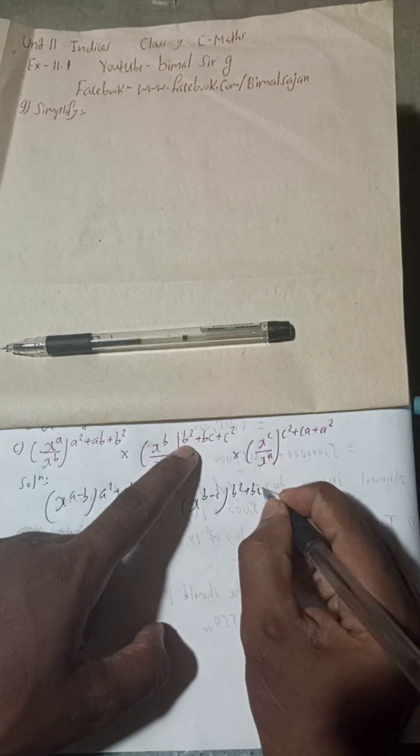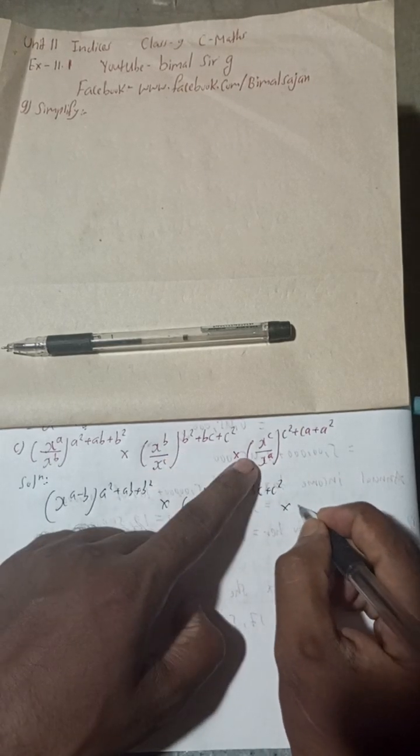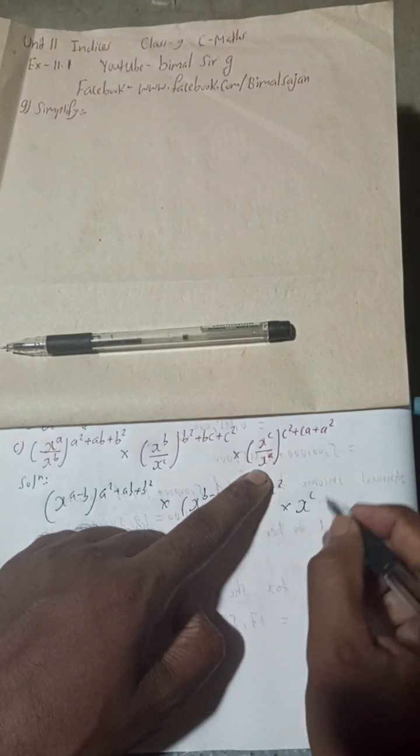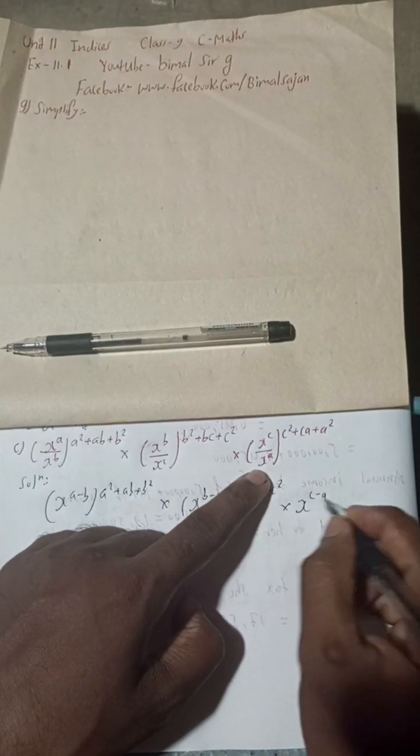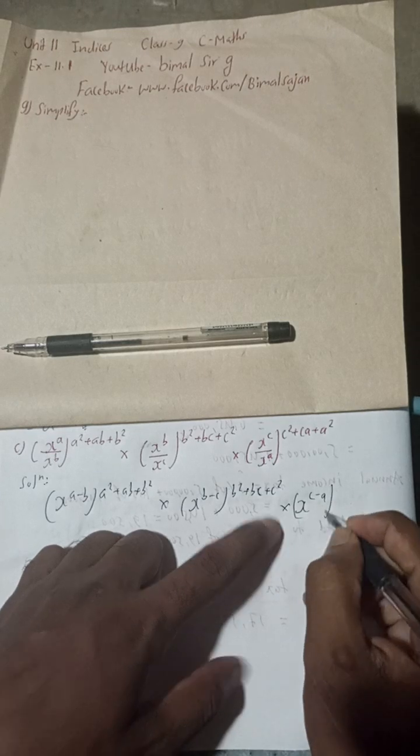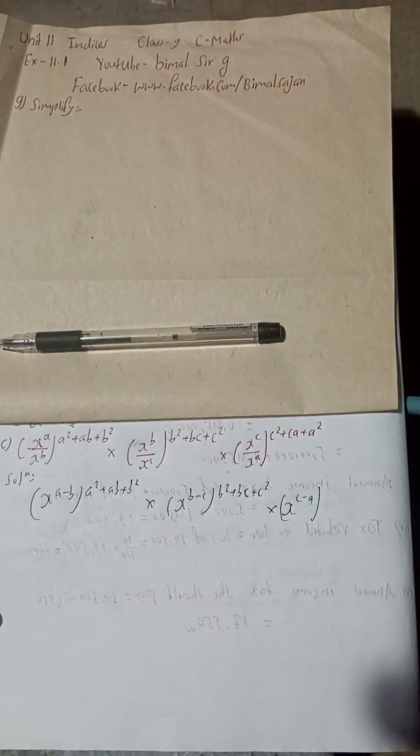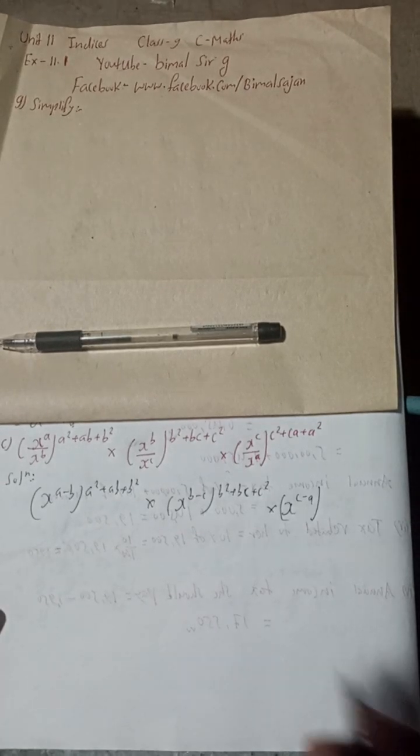Then b² + bc + c² into this is here x to the power c, and this is power a, so the exponent here is minus a.